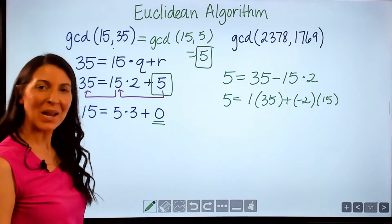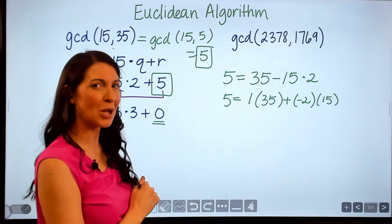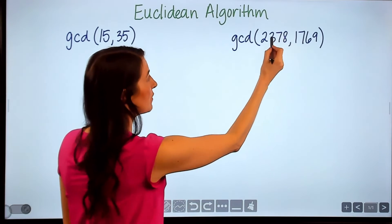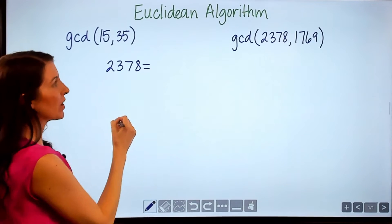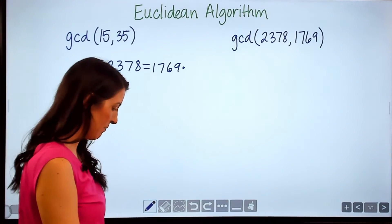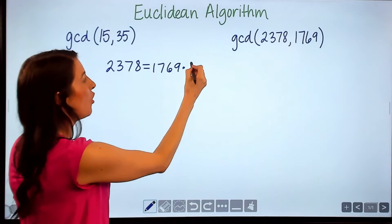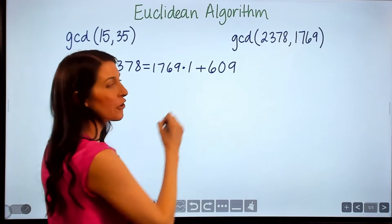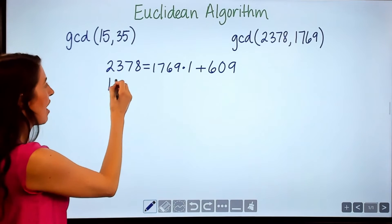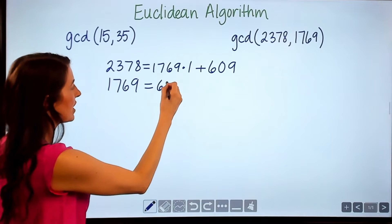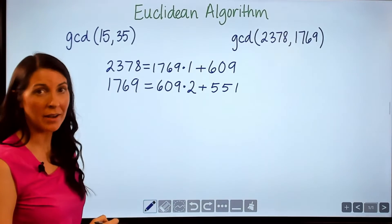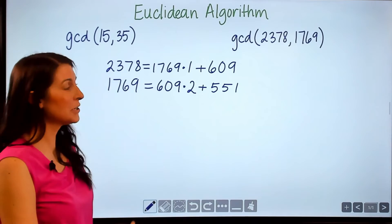Now I want to walk through an example that uses some larger numbers. Again, you take the largest of the two numbers and set that equal to — in this case 2378 equals 1769 times 1 plus a remainder of 609. Then this number moves to this spot and this number moves here, so now 1769 equals 609 times 2 plus a remainder of 551. We continue this process until we get a remainder of zero.